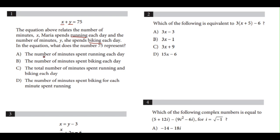If we read A, it says the number of minutes she spends running, that's just x, not x plus y. B is the number of minutes spent biking each day, that's just y, so it can't be B. C is the total number of minutes spent running and biking, that sounds like our answer. And D says the number of minutes spent biking each minute spent running, which is not the answer. So answer choice C for number 1.